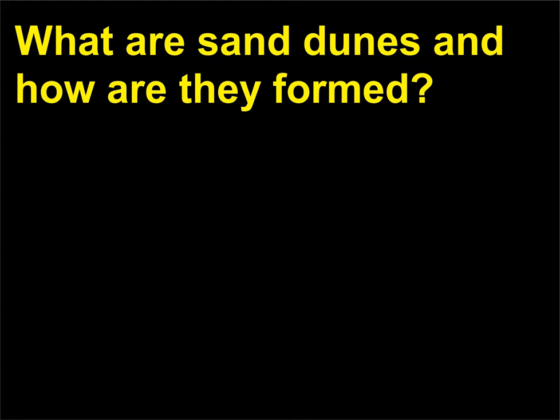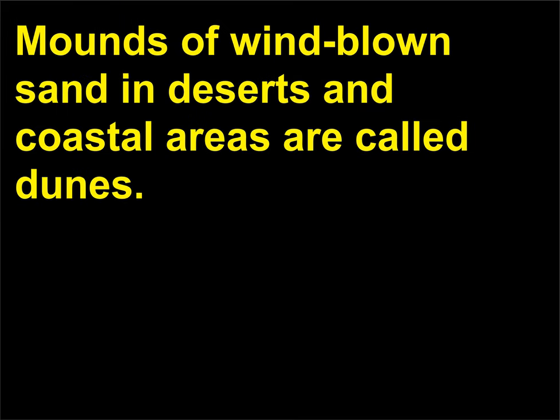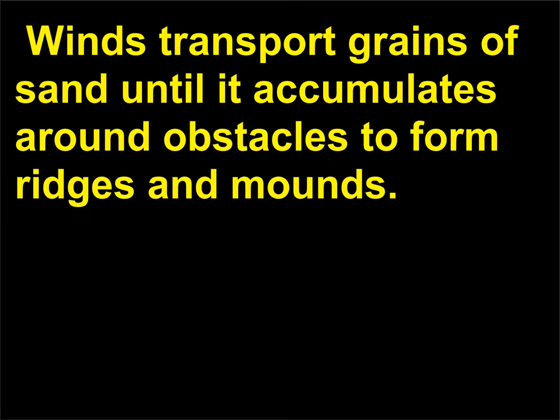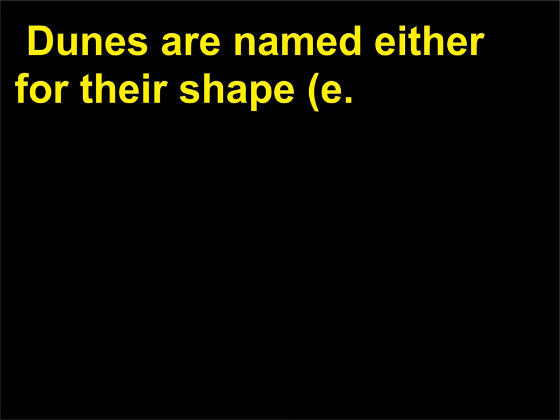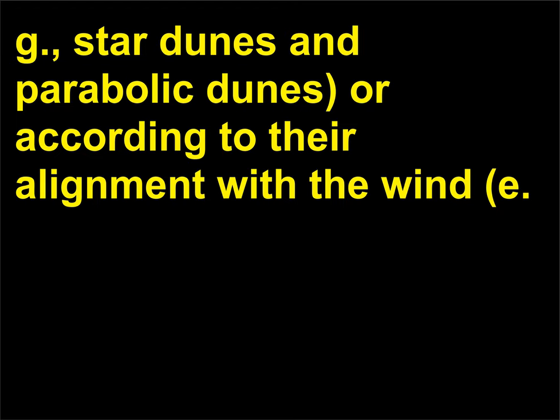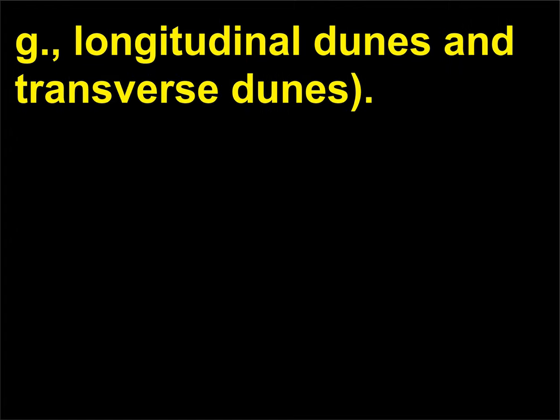What are sand dunes and how are they formed? Mounds of windblown sand in deserts and coastal areas are called dunes. Winds transport grains of sand until it accumulates around obstacles to form ridges and mounds. Wind direction, the type of sand, and the amount of vegetation determine the type of dune. Dunes are named either for their shape, e.g., star dunes and parabolic dunes, or according to their alignment with the wind, e.g., longitudinal dunes and transverse dunes.